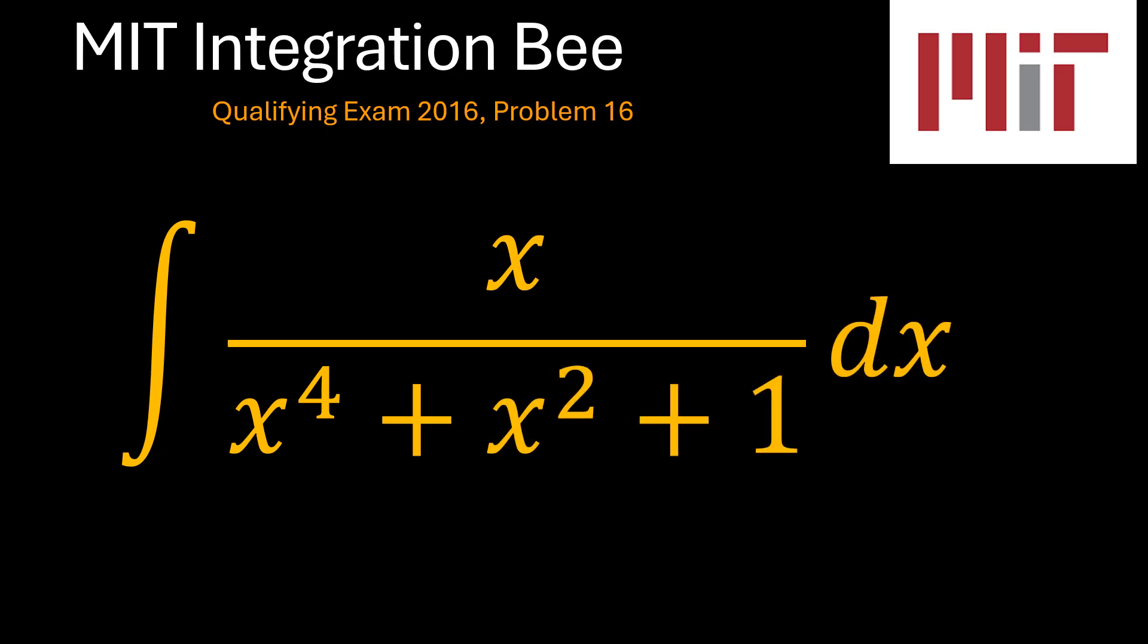This is a fairly tricky but easy problem. Let's see how we may be able to solve it. So, x over x to the power 4 plus x squared plus 1. This is our problem.